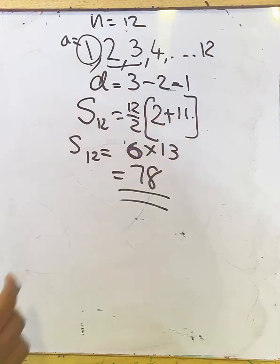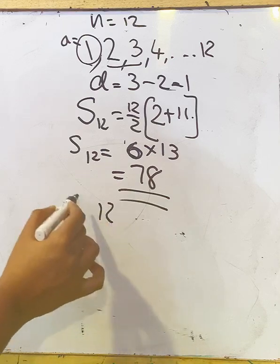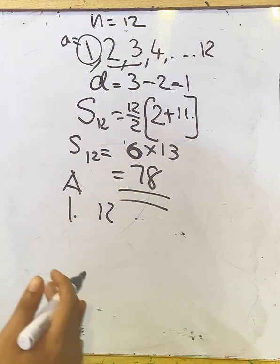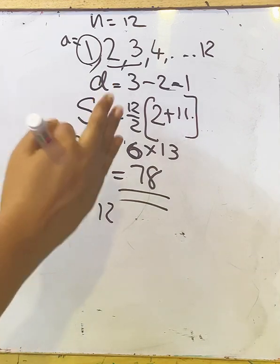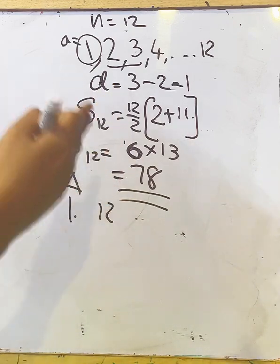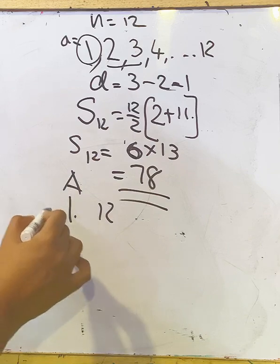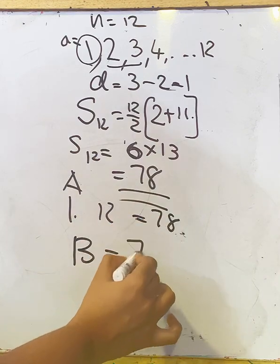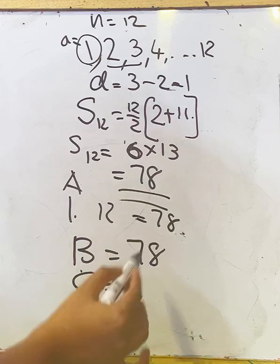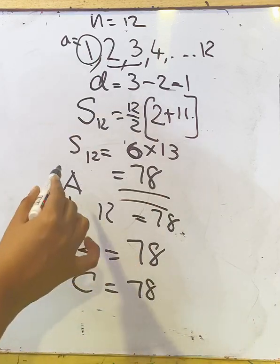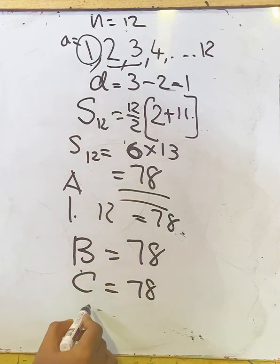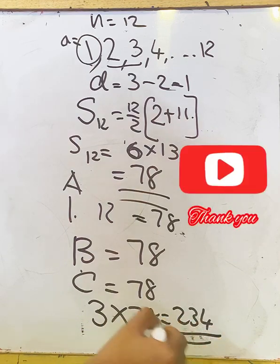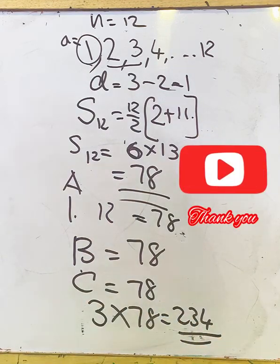From first standard to 12th, section A planted 78 trees. There are three sections: in first standard there are three classes, second standard three classes, like that. If this is A section's number of trees, B section will also plant 78, and section C also has 1 to 12, so total number of trees is 3 × 78 = 234. This is the total number of trees planted by the students.